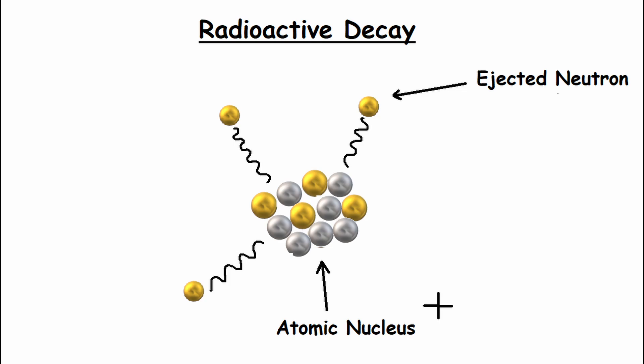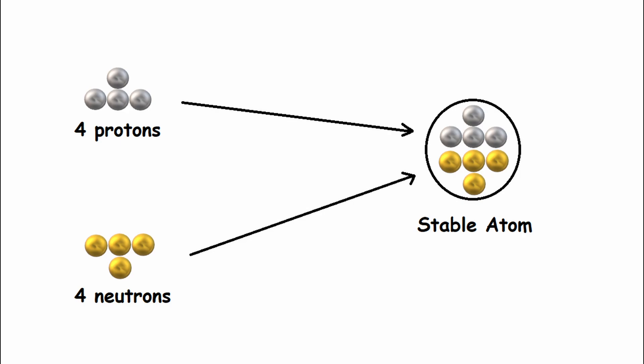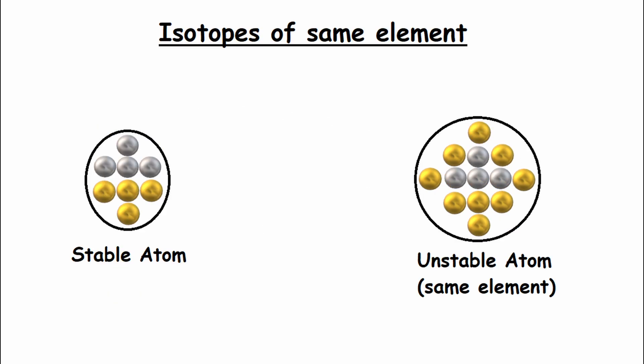The neutron is also emitted during radioactive decay in some elements. Typically, an element is considered to be stable if it has roughly an equal number of protons and neutrons in its nucleus. But different isotopes of the same element can have far more neutrons than protons in their nucleus, making them unstable. As a result, they spontaneously eject these neutrons in a process called radioactive decay in an effort to move towards a more stable state.